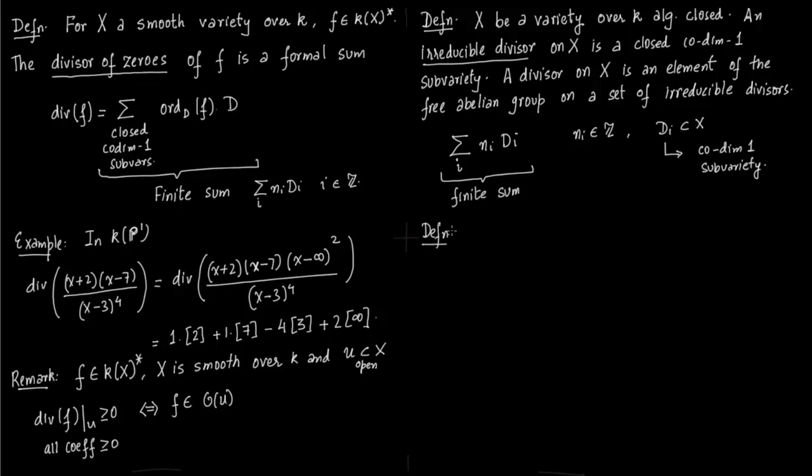Now we want to give definition of linear equivalence. So first you fix two divisors D_1 and D_2. Notice that D_1 and D_2 are finite sums - they are not particular codimension-1 subvarieties, they are just like a collection. They are finite sums on a smooth variety X. So both D_1 and D_2 are finite sums. D_1 would consist of a bunch of codimension-1 subvarieties and integers attached to it, and similarly with D_2.